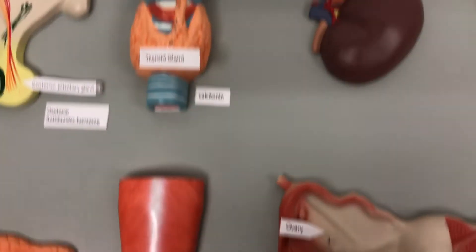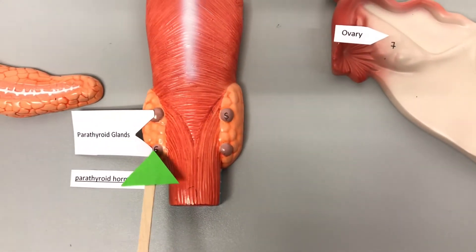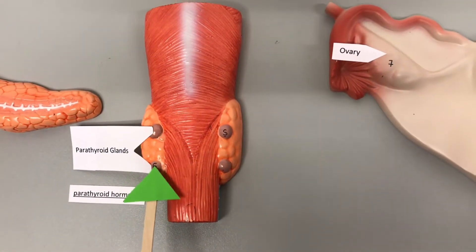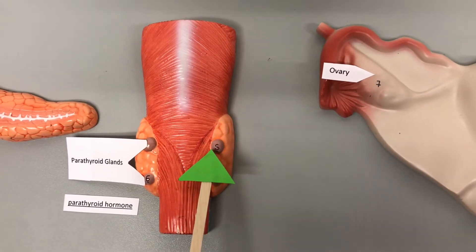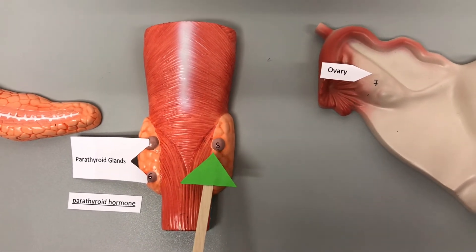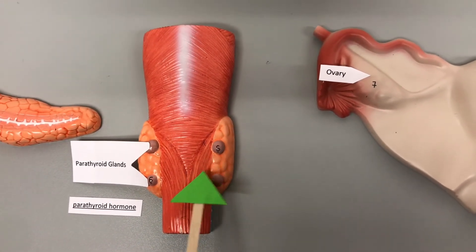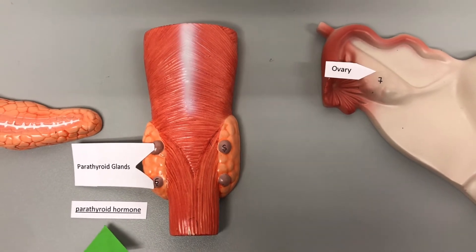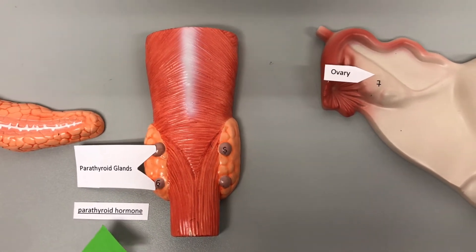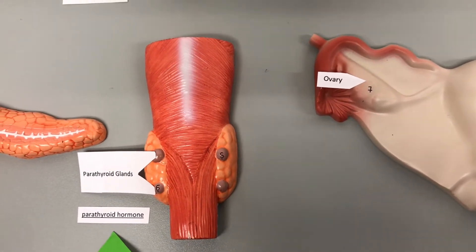The parathyroid glands are on the posterior side of the thyroid gland, and they secrete the parathyroid hormone, which increases blood calcium levels.